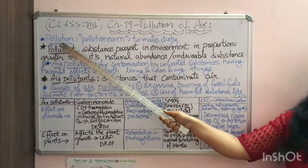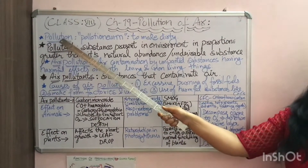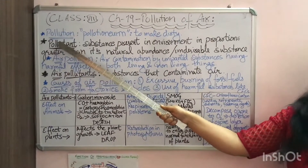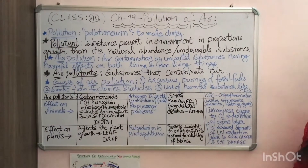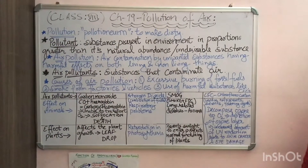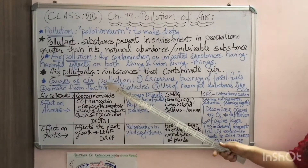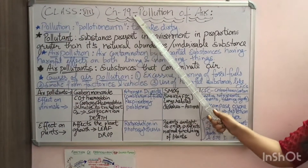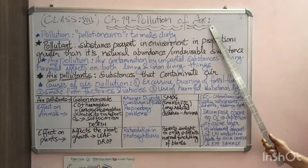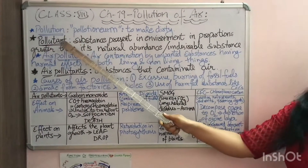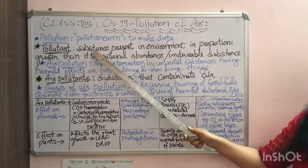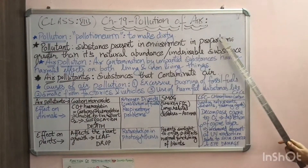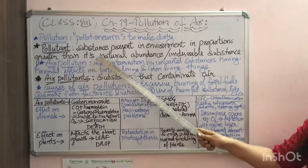Pollution can be of various types. Whenever the environment is getting dirty, we call it pollution. For example, it can be air pollution, it can be water pollution, or it can be soil pollution. But today our main concern is pollution of air. Now, what is a pollutant? It is a substance present in the environment in a proportion greater than its natural abundance.